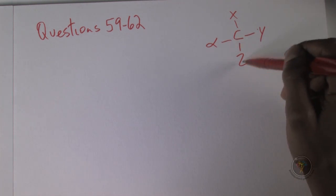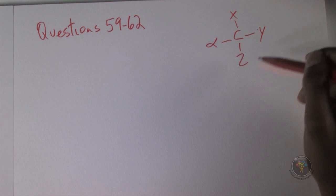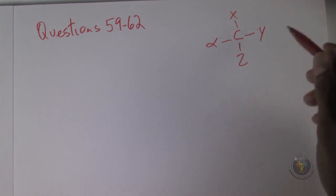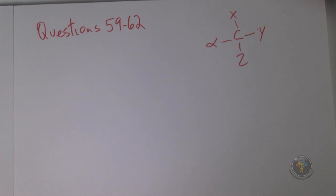It's four different substituents — the atoms can be the same, but when you keep going and compare, they will be different at some point. The number of stereoisomers is 2 to the n. So, cholesterol has the following structure — how many stereocenters does cholesterol have?